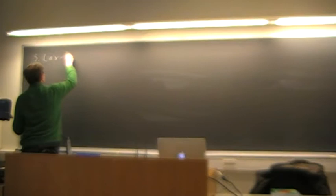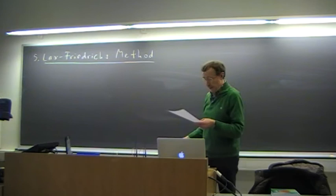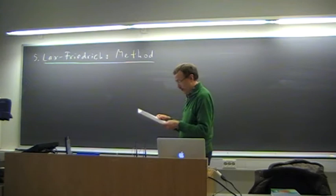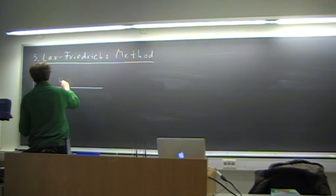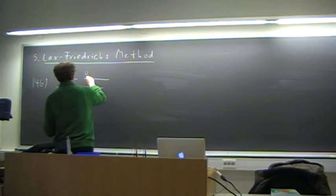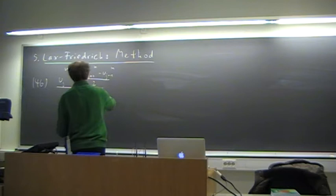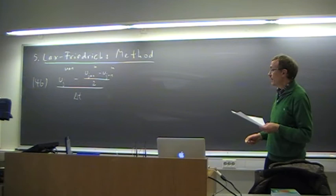Let us just repeat that. The method is named after Peter Lax, who got the Abel Prize some years ago, and Friedrichs was a co-worker of Richard Courant. He is the F in the CFL condition. The special trick with this method is that instead of using uj at the current time level, we take the average of the values at u_{j+1}^n and u_{j-1}^n.